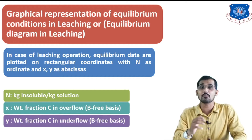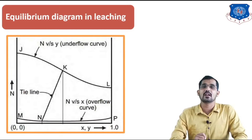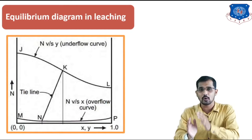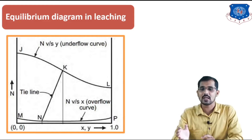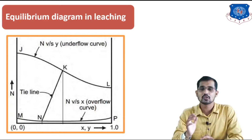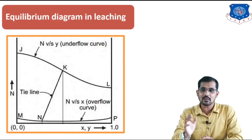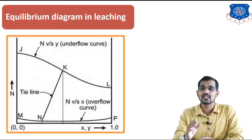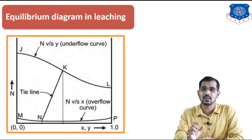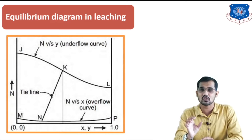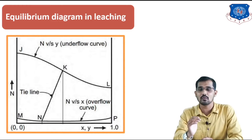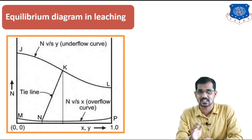That is why x and y are written on the B-free basis. This is the equilibrium diagram in leaching, where we are plotting N versus x and y. N is the amount of insoluble per kg of solution, and x and y are the weight fraction of the solute in overflow and underflow. The curve jkl is your underflow curve, and the curve M and p is your overflow curve — N versus y for underflow, and N versus x for overflow.